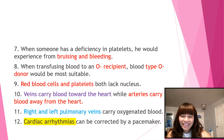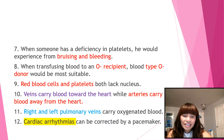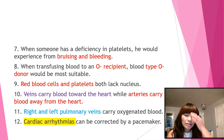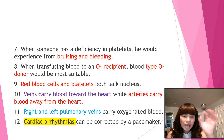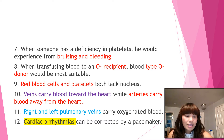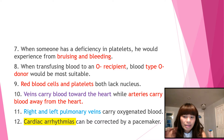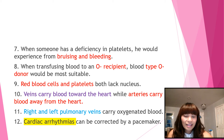Number eight: when transfusing blood to an O negative recipient, blood type O negative donor would be most suitable — they would be a perfect match. Number nine: red blood cells and platelets both lack a nucleus, which is what they have in common.